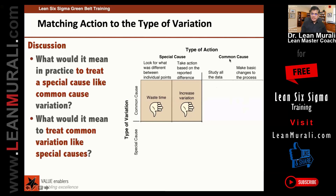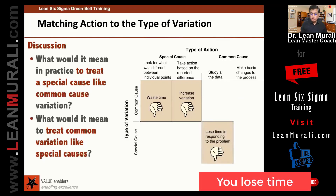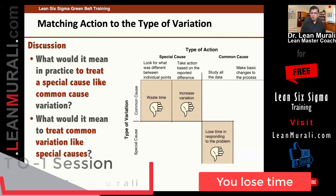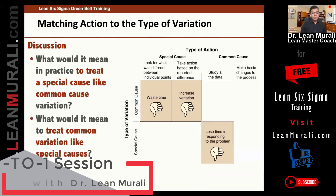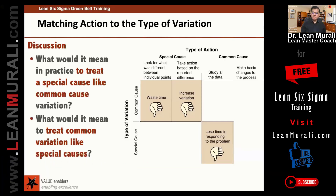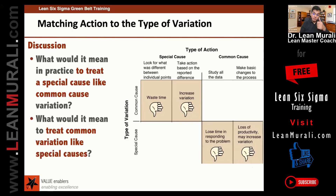Similarly, if it is actually a special cause but you study all the data, what will happen? You will lose time in responding to the problem. Because you know it is a special cause, you can straight away pin it down — but now you are studying all the data and taking more time to respond. And if it is a special cause and you make basic changes to the process, what happens? Because only if it is a common cause should you study all the data and make basic changes. If it is a special cause and you make basic changes, there will be loss of productivity and it may also increase variation.